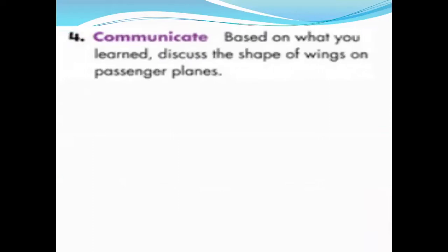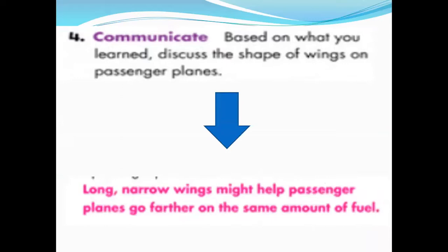Read for us question number four. Communicate. Based on what you learned, discuss the shape of wings on passenger planes. Long, narrow wings might help passenger planes go further on the same amount of fuel. So, if we have long, narrow wings, it helps passenger planes go further on the same amount of fuel.